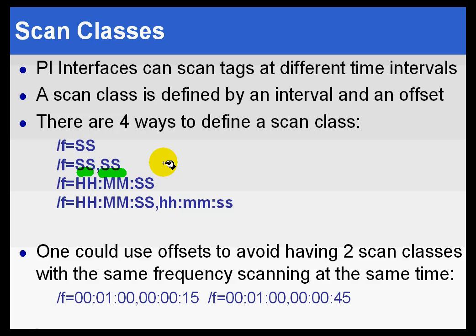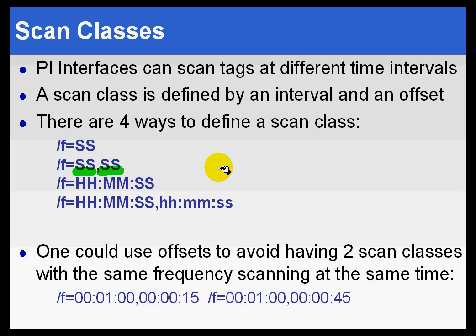For example, specifying 05,00 indicates five-second scanning exactly at the top of the minute — at 0, 5, 10, 15, 20 seconds, etc. If you specify five seconds at a two-second offset, that would scan at 2, 7, 12, 17 seconds, etc.